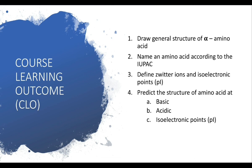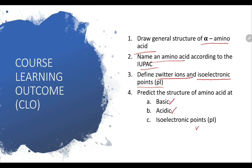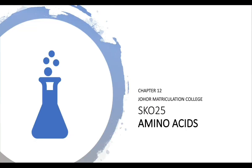That's all for today. Let's recap the course learning outcomes for this amino acids video. You should be able to draw the general structure of alpha amino acid. Secondly, you should know how to name amino acids according to IUPAC. Then you learned about zwitterions and how to draw them for any amino acid. You also learned the definition of isoelectric points, and lastly, how to draw the structure of amino acids at different pH — either at basic condition, acidic condition, or at the isoelectric point. Thank you for watching. Bye-bye.